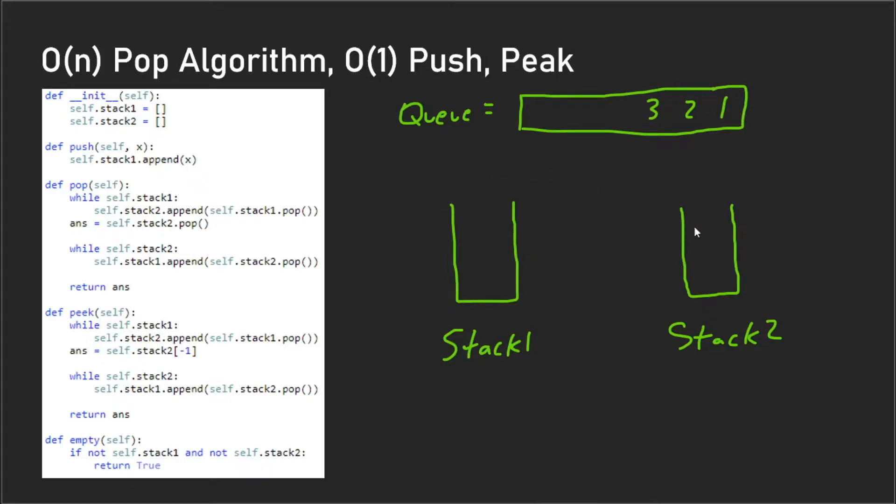Now how would we translate that into stacks? What we want to do is once we know what elements we want to push in, we just push it onto stack one. So one, two, and three in that order. Now we want to actually pop an element out of the queue.